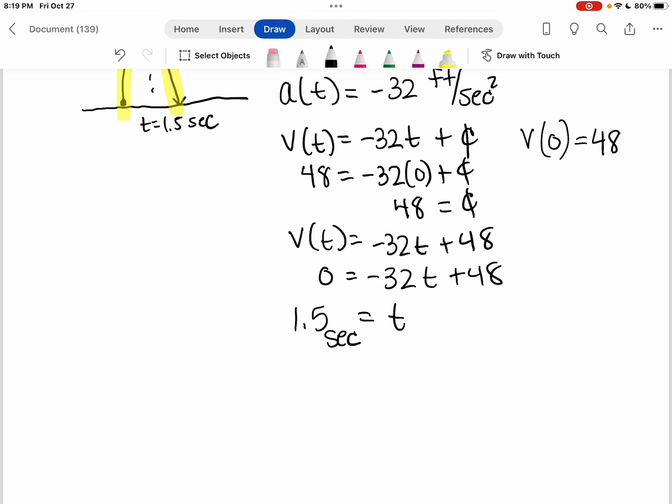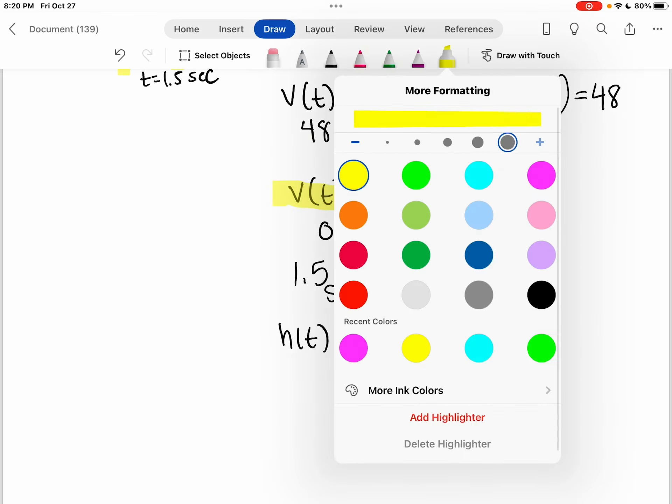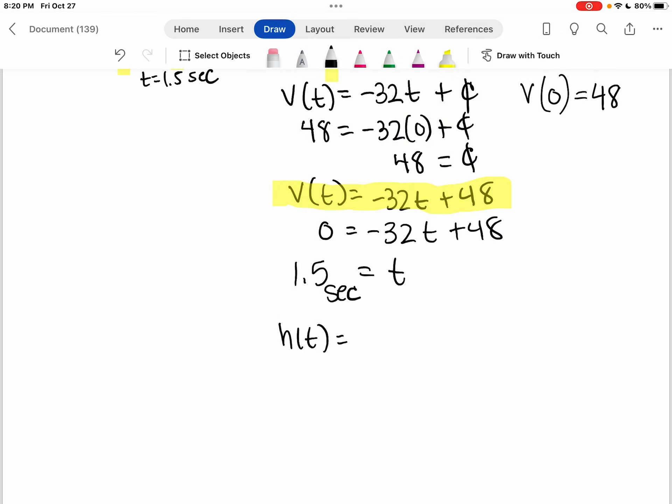And then use that to find the height function. So we're going to get the height function. That's the antiderivative of the velocity. So if I take the antiderivative of the velocity, I'm going to get negative 32T squared divided by two, and then plus 48T plus C.